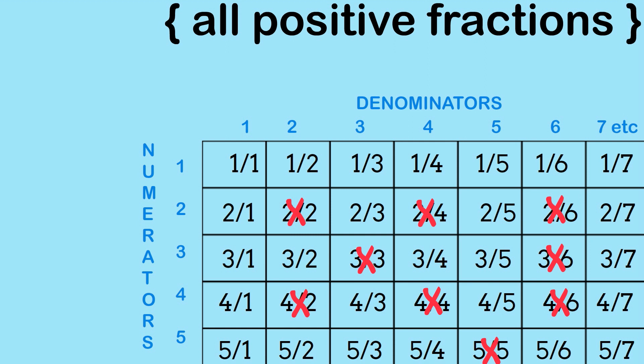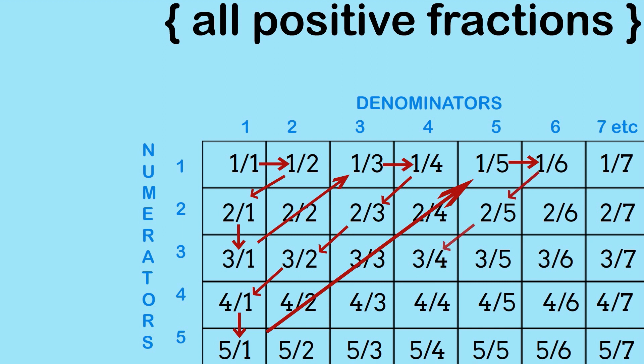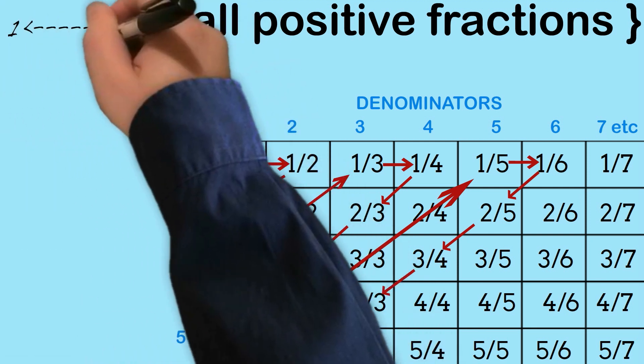Now we can do our mapping from the counting numbers to what we've got left of all these simplified fractions. So we'll start here with one-on-one, then we'll go, let's go across to a half, then down to two-on-one, then we'll go down to three-on-one, and then we'll skip across two-on-two, because that's not included, and we get to one-third. Then we go across to one-quarter, down to two-thirds, down to three-on-two, down to four-on-one. And we can continue this process of going back and forwards in these ever-increasing length paths, and the process will work.